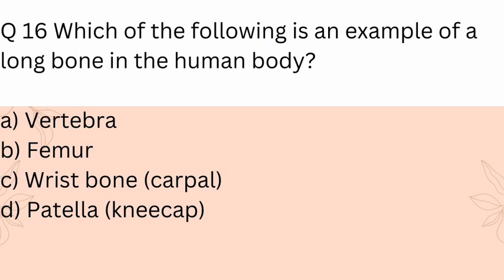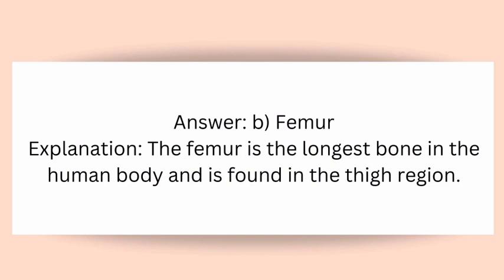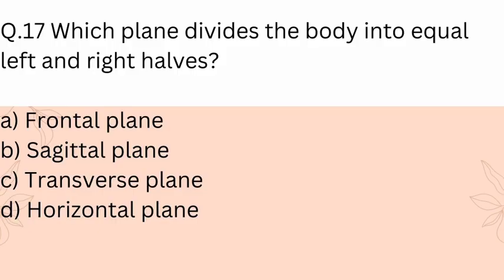Question 16: Which of the following is an example of a long bone in the human body? A) Vertebrae, B) Femur, C) Wrist bone (carpal), D) Patella (kneecap). Answer: B) Femur. Explanation: The femur is the longest bone in the human body and is found in the thigh region.